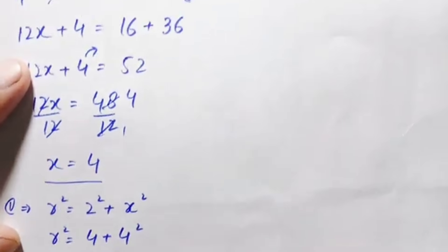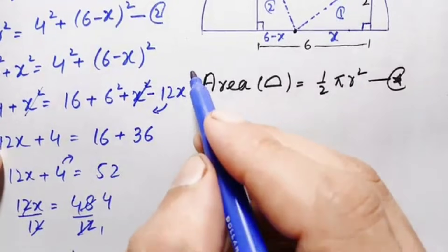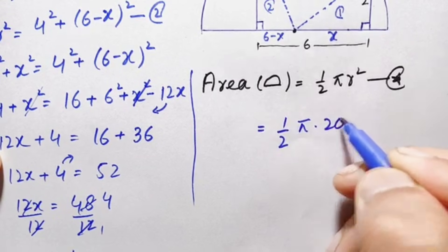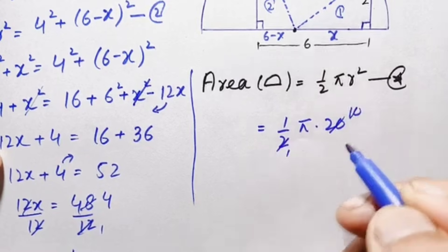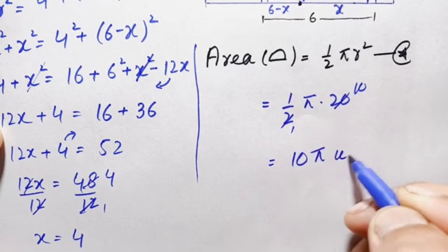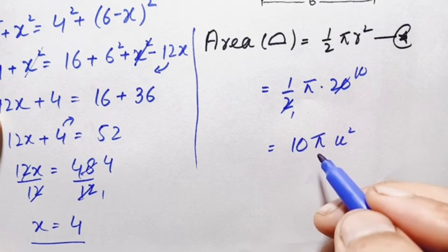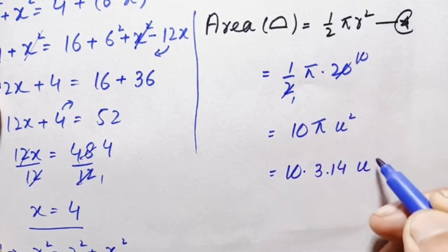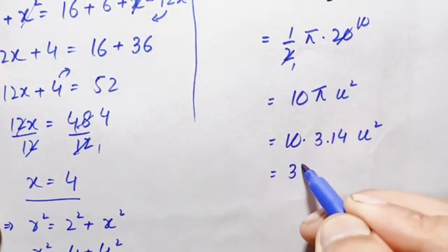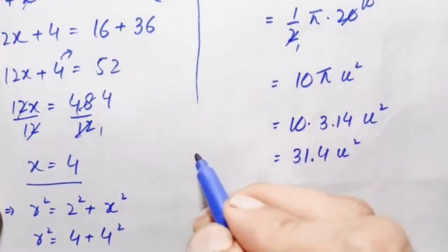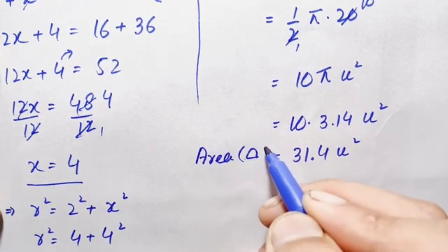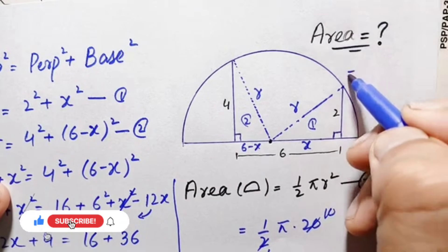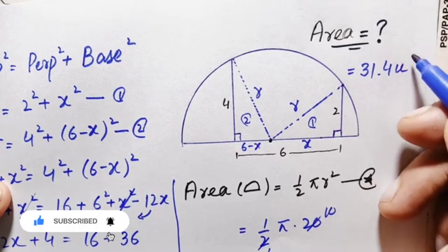We substitute r² = 20 into our area formula (equation star): area = ½ × π × r² = ½ × π × 20 = 10π. Using π ≈ 3.14, this gives 10 × 3.14 = 31.4 units². Therefore, the area of this semicircle is 31.4 units².